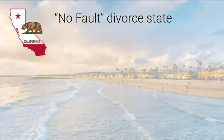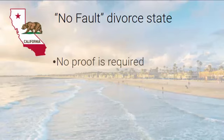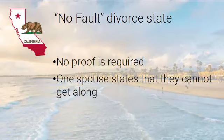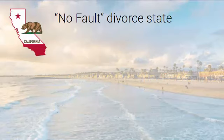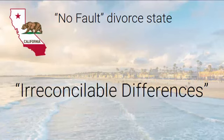California is a no-fault divorce state. The spouse asking for divorce does not have to prove that the other spouse did something wrong. To get a no-fault divorce, one spouse has to state that the couple cannot get along. This means there is no guilty or non-guilty person from the court's point of view. Legally, this is called irreconcilable differences.